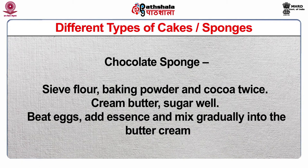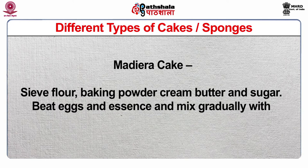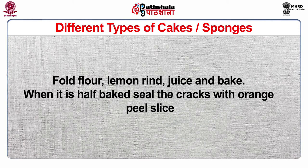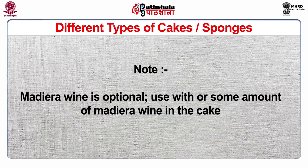Chocolate sponge (Madeira cake): sieve flour, baking powder and cocoa twice. Cream butter and sugar well, beat eggs, add essence and mix gradually into the butter cream, fold in flour, add milk and mix well. Put the mixture in a cake tin and bake at 375°F. Cool and use as desired. For Madeira cake: sieve flour and baking powder, cream butter and sugar, beat eggs and essence and mix gradually with butter cream. Fold flour, lemon rind and juice and bake. When it is half-baked, seal the cracks with orange peel slice. Note: Madeira wine is optional — use with some amount of Madeira wine in this cake.